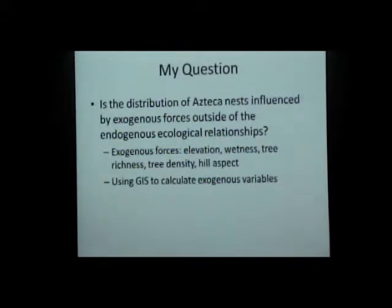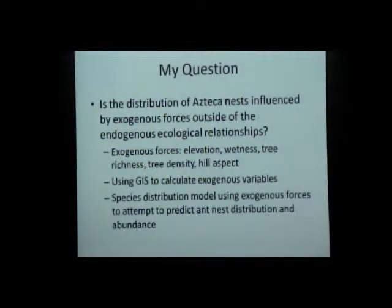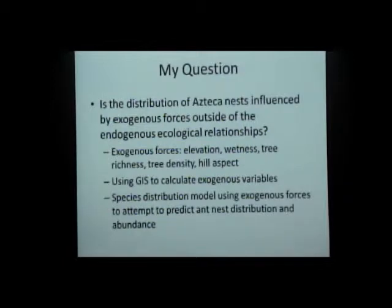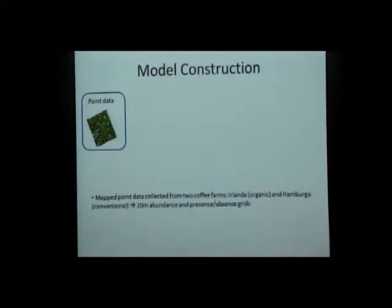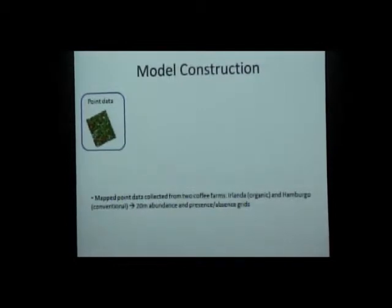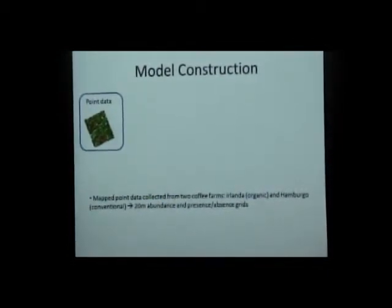I used GIS to investigate this question, and I created a species distribution model using exogenous forces as predictors to see if they had a significant influence on the distribution of ants on a farm. For my model construction, I started with point data of all the trees within two plots in Mexico. I've been working with a lab that has had a 45-hectare plot in an organic farm in Mexico, and I used their data from the past 10 years, looking at one year for this paper.